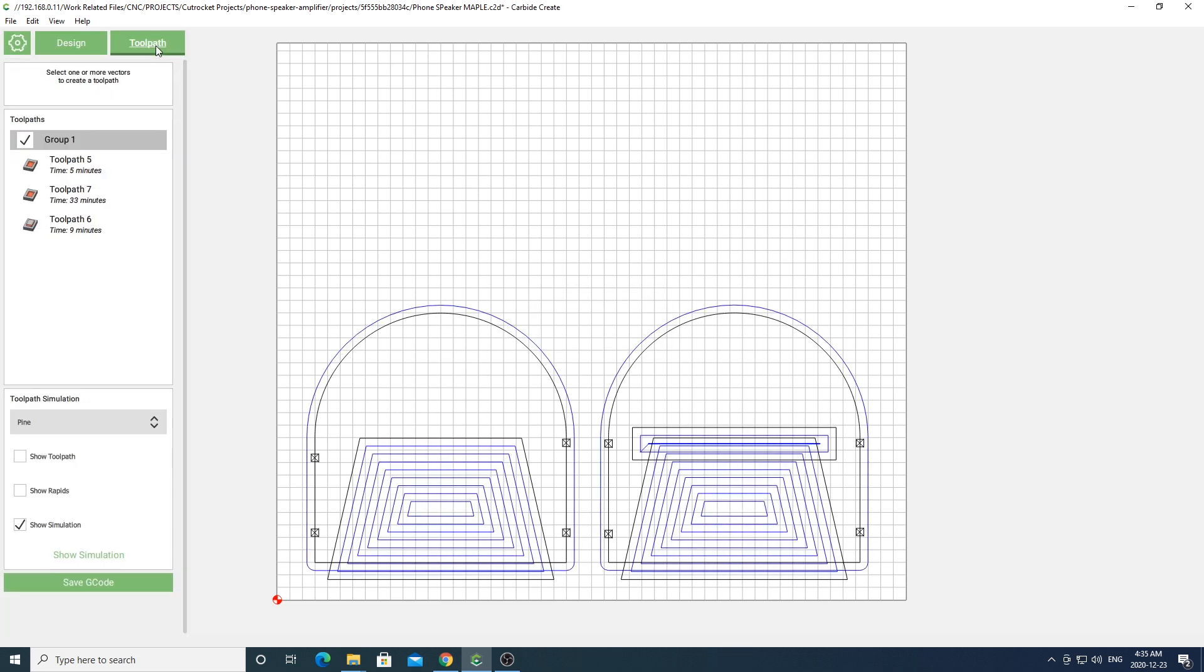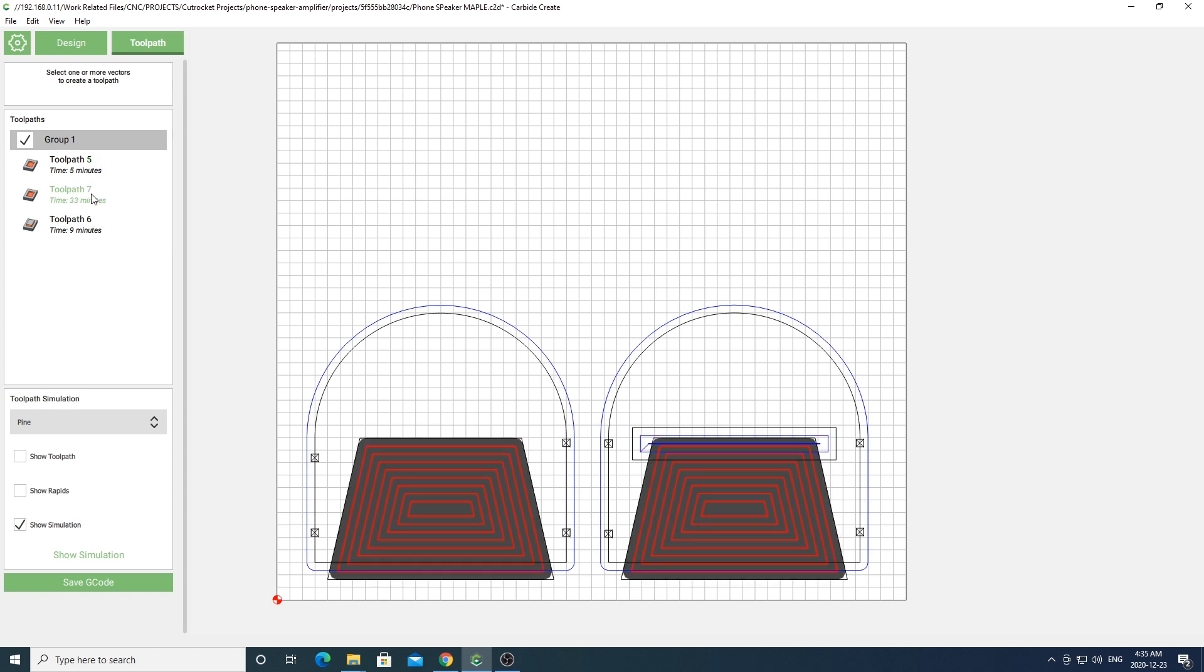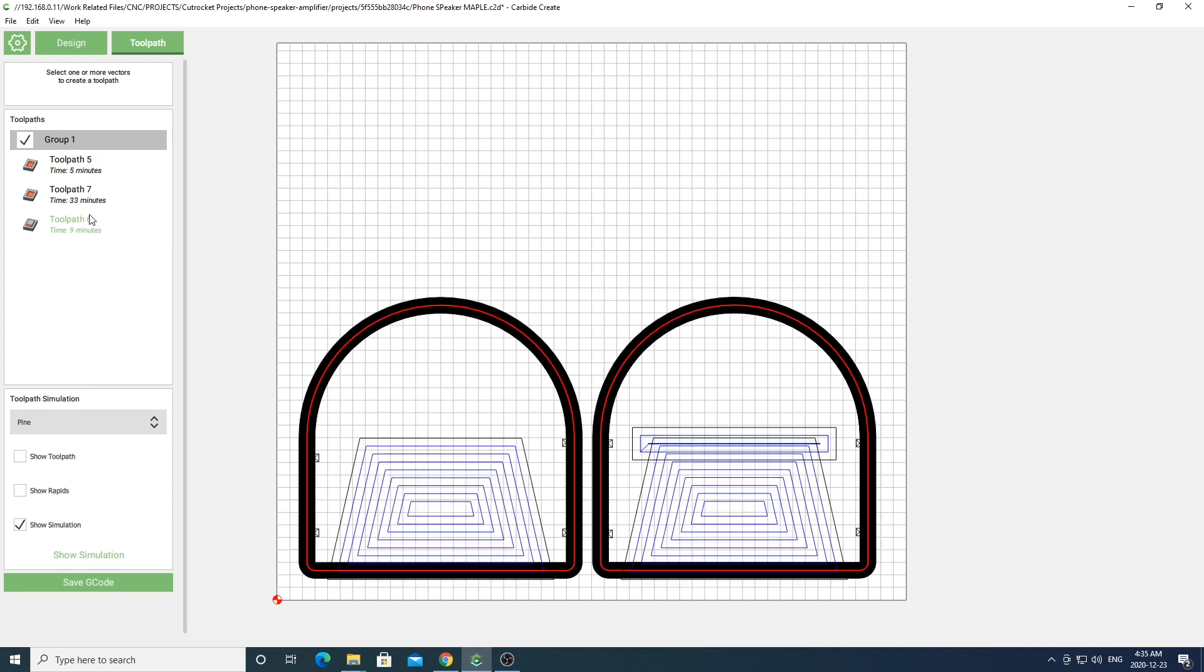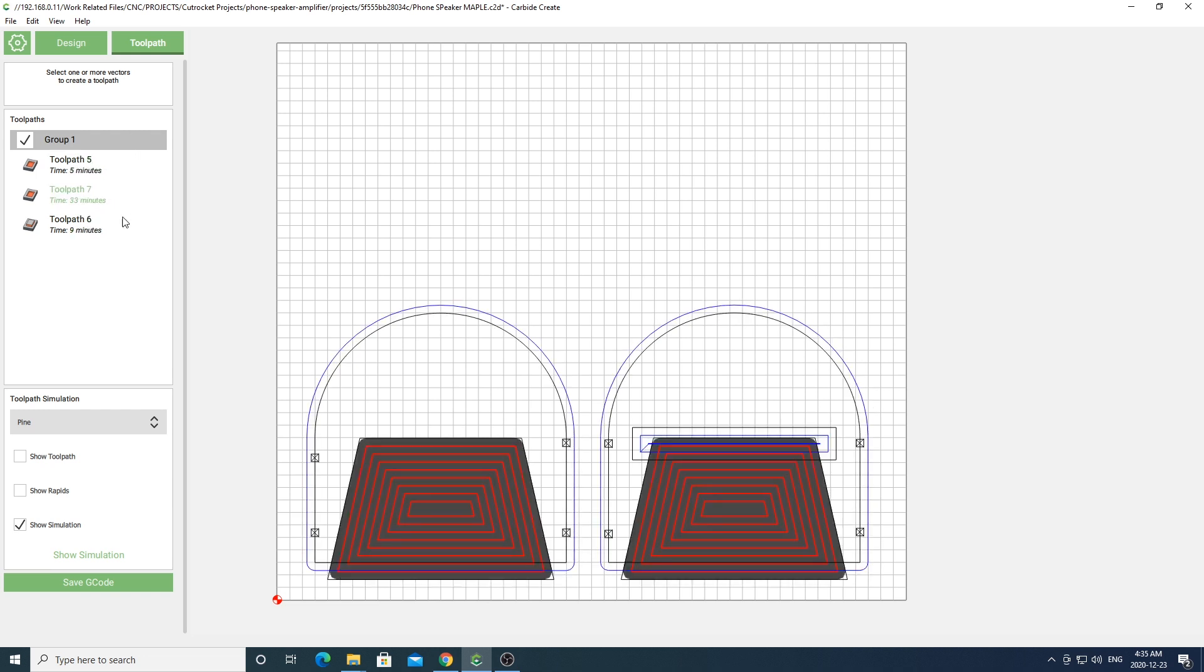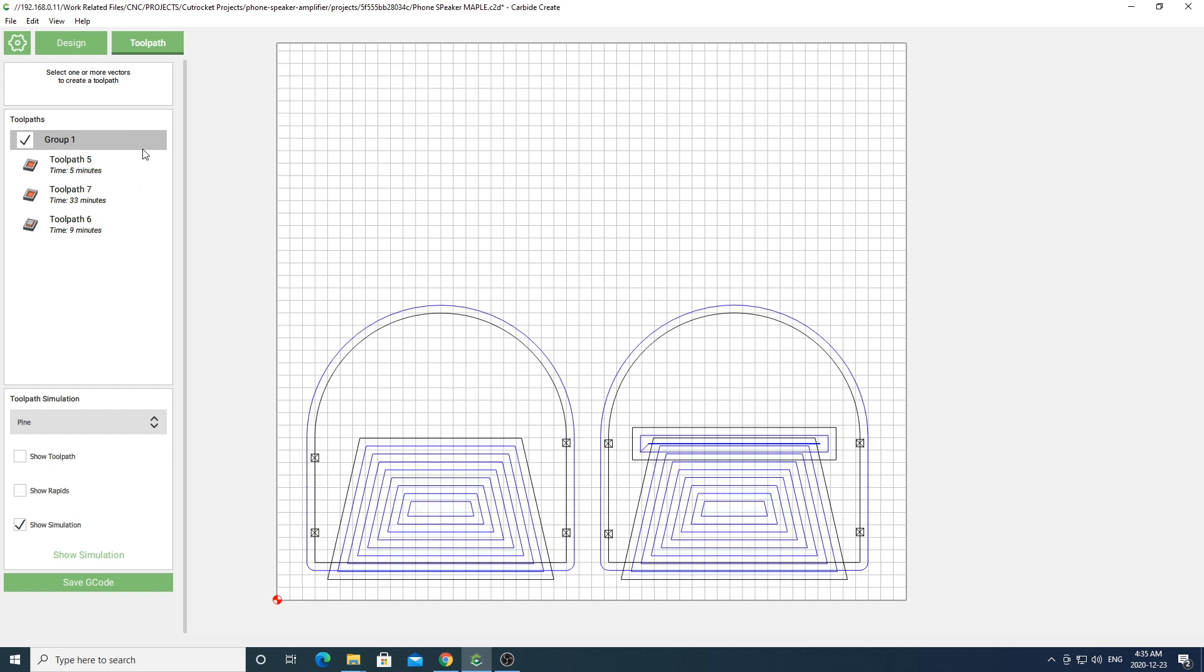Now you can go over to the tool paths and you'll see that there's three tool paths for this project. One path will cut out the hole for the phone. The next path will cut out the pocket for the speaker and the last path will be the outline that cuts out the actual speaker from your material. This last path will have some tabs that will secure your project to the material so you'll need to cut them out after the fact.